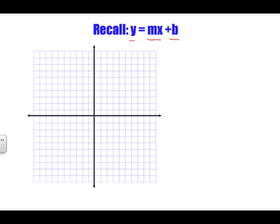In the form y = mx + b, this M value in front of x — the number in front of x when the equation is in this format — is considered the slope of the line. The slope is considered rise over run.